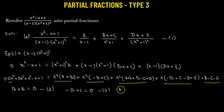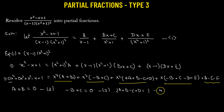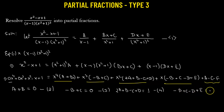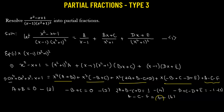For the coefficient of x squared: 2a plus b minus c plus d equals 1 — equation 4. For the coefficient of x: negative b plus c minus d plus e equals negative 1 — equation 5. And for the constant term: a minus c minus e equals 1 — equation 6.